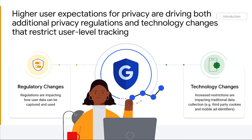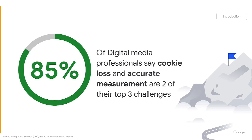As the granularity and precision of event level conversion data becomes more limited, marketers will need to take action on their measurement strategy so that they can drive performance and ultimately their bottom line. We know that the changing digital ecosystem and the effects on measurement are top of mind for marketers — this is a problem that is affecting the entire industry. As a result, we must pay more attention to measurement as the ecosystem evolves. According to an IAS 2021 Industry Pulse report, 85% of digital media professionals say cookie loss and accurate measurement are two of their top three challenges.